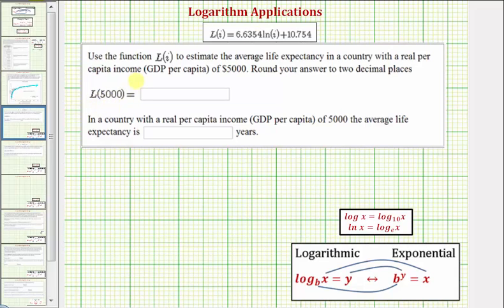So we'll substitute 5,000 for I. So L(5000) equals 6.6354 times natural log 5,000 plus 10.754. And now we'll go to the calculator to get an approximation for this.